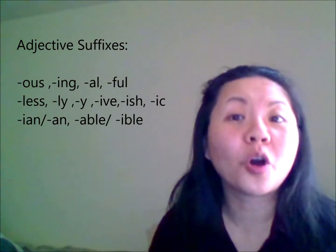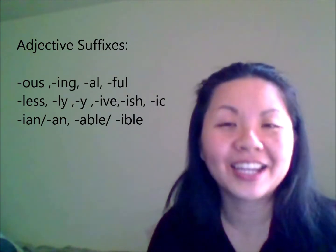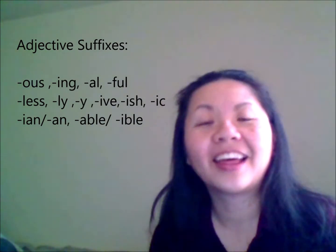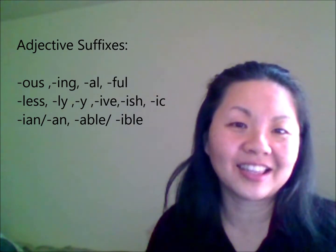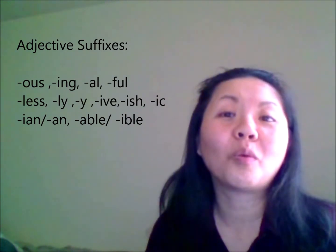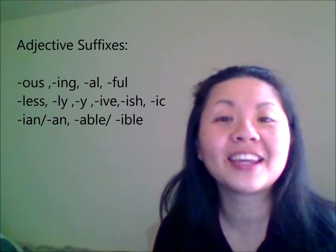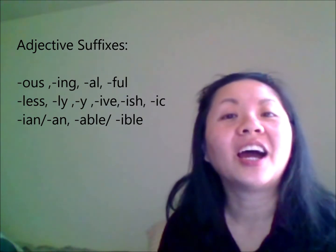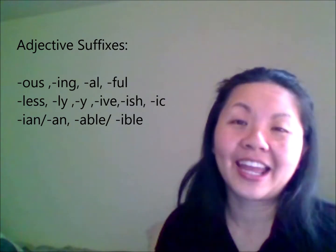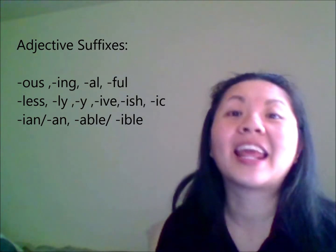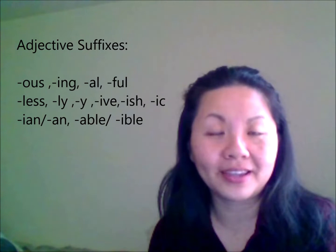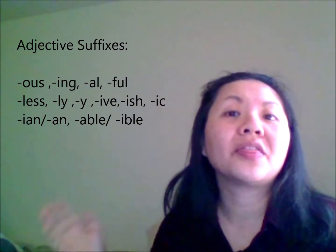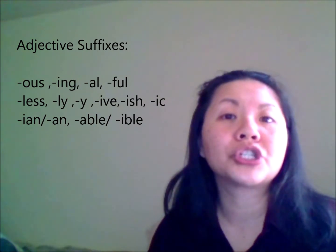So we have O-U-S, I-N-G, A-L, F-U-L (full), L-E-S-S (less), L-Y, Y, I-V-E, I-S-H, I-C, I-A-N or A-N, and A-B-L-E and I-B-L-E. So these are suffixes that will change a word into an adjective.